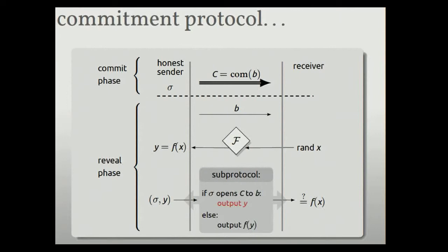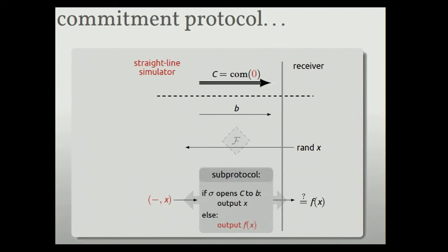What about if the receiver is corrupt? I need to show a simulator for a corrupt receiver. The simulator does this. So the simulator gets to bypass this instance of f. That's what simulators do in the UC framework. They get to bypass the interface to the functionality. The simulator gets this value of x and he can feed it in through here and who cares about this first branch of the if statement because he has x so he can find a way to get f of x delivered to the receiver, even if he committed to a dummy thing, right? So in this case, the opening of the commitment is never really used. But still he can get f of x delivered to the receiver and the receiver is happy.